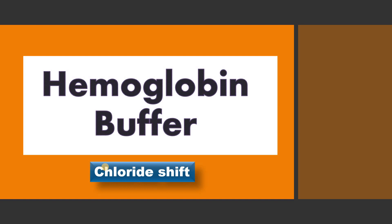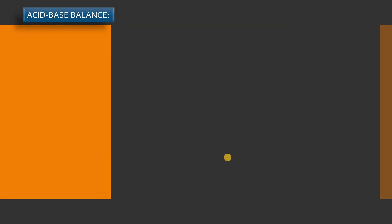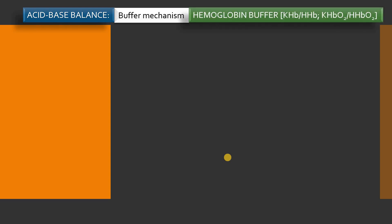Hello everyone, welcome back, this is Dr. Vijay. Today we are going to learn about hemoglobin buffer and a concept called chloride shift. This buffer mechanism is the first line defense mechanism in case of acid-base balance. There are various buffers like bicarbonate and phosphate, but one of the important buffers — especially intracellular and specifically in the RBC — is the hemoglobin buffer.